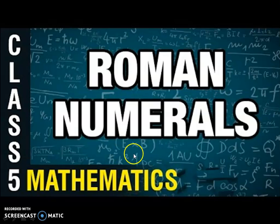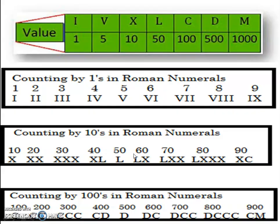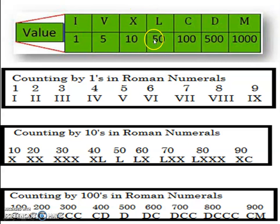Today we are going to see how we can write standard alphabets to represent Roman numerals. These are the standard alphabets: I represents 1, V represents 5, X represents 10, L represents 50, C represents 100, D represents 500, and M represents 1000. This is the standard alphabet used to write Roman numerals.